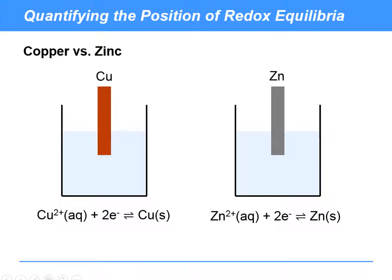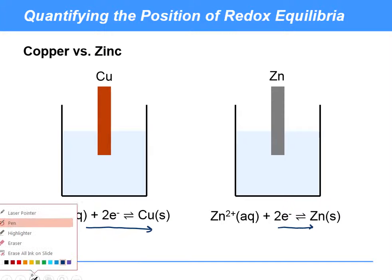Where we left off last time was that in an aqueous solution, metals will become reversibly oxidized to form their ions, and then the ions can regain the electrons to reform the metal. Depending on the metal, they're going to be different positions of equilibrium. We said that copper is going to be very far to the right, whereas zinc is going to be not quite as far to the right.